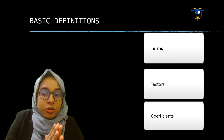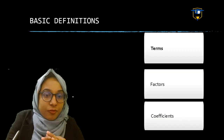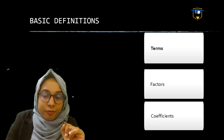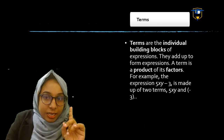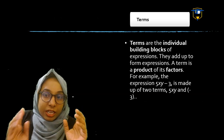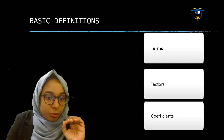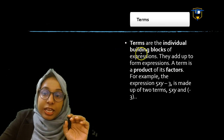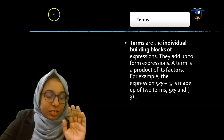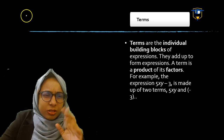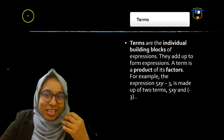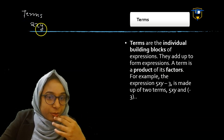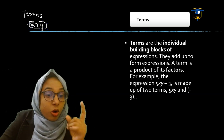Now you have to know these terms within Algebra Expressions: first, terms; second, factors; third, coefficients. Terms are the individual building blocks of expressions. For example, in 2xy, the entire 2xy is called one term.